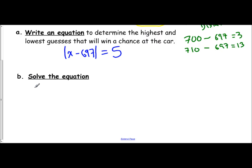So now we solve it. We drop the bars and keep the right side as is, and we drop the bars and change the right side to its opposite, which is negative 5. So to solve, I would add 697 to both sides and get 702. I would add 697 and get 692.